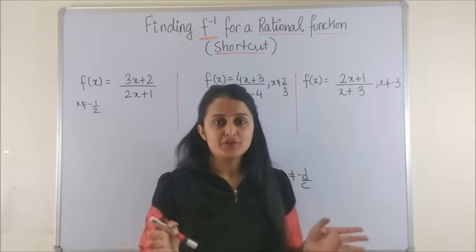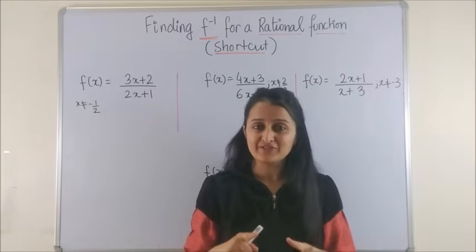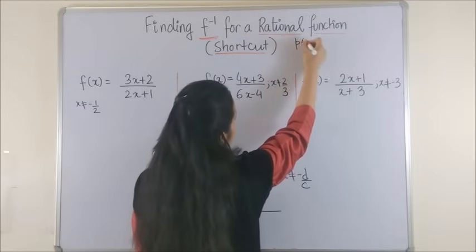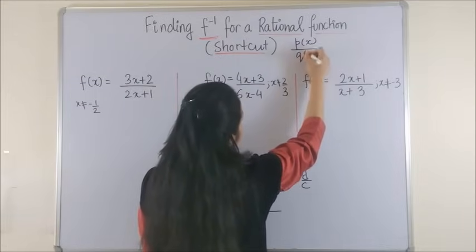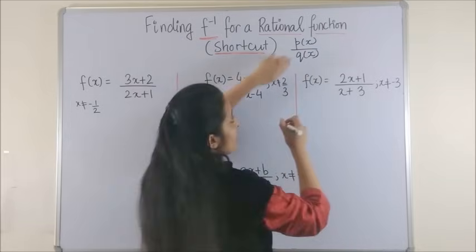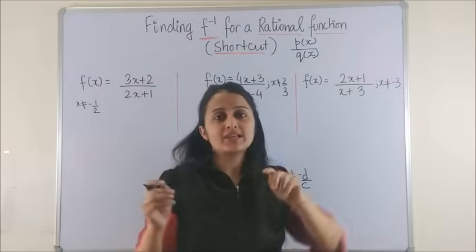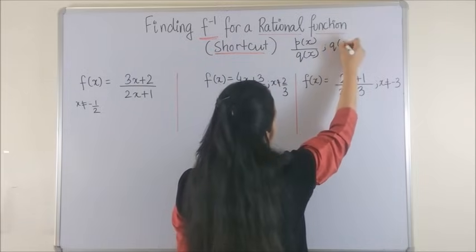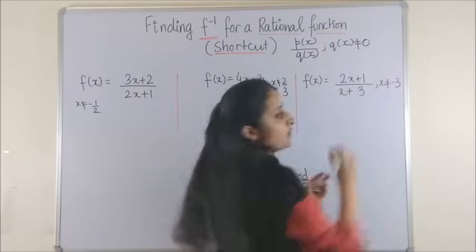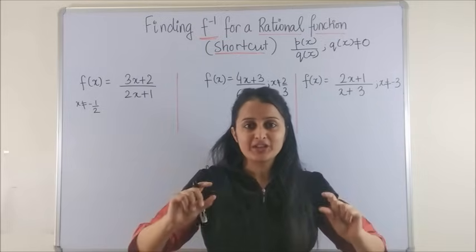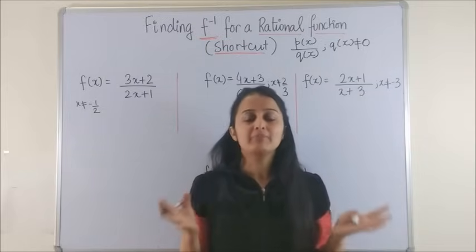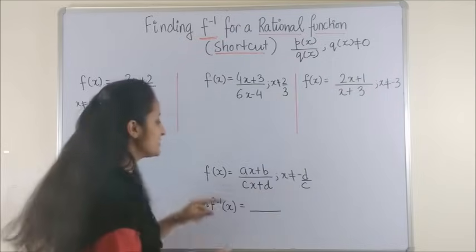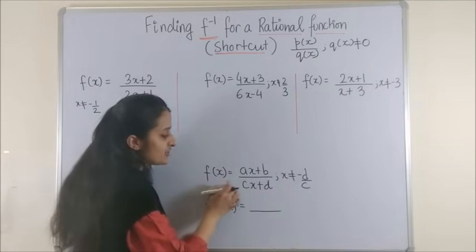First of all, for those wondering what rational functions are: rational functions are functions of the form p(x) over q(x), where p(x) and q(x) are polynomial functions, and your denominator cannot be 0. So if you divide two expressions, that becomes your rational function.